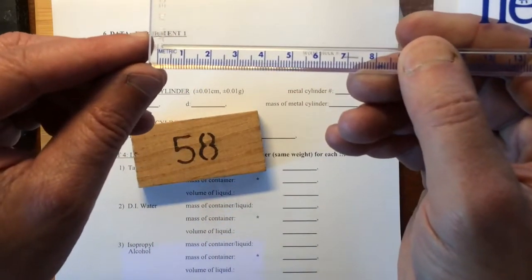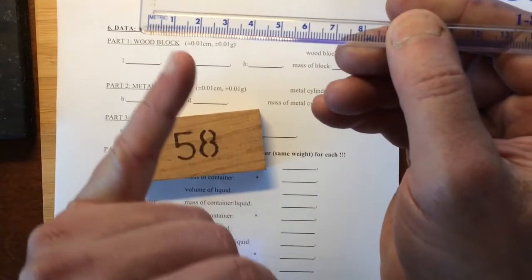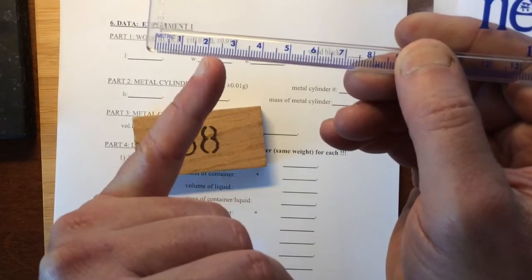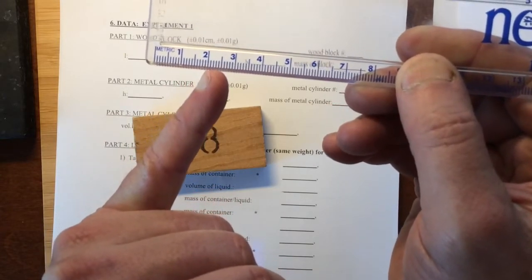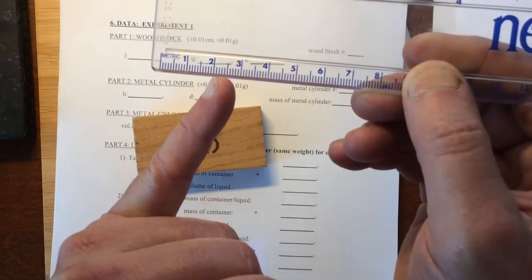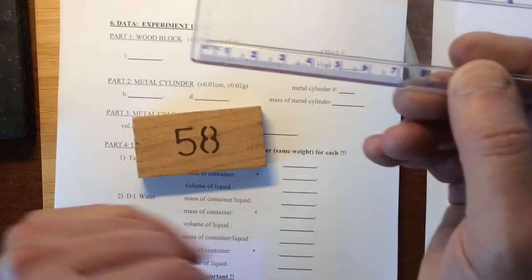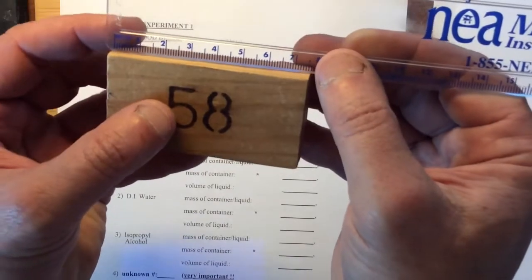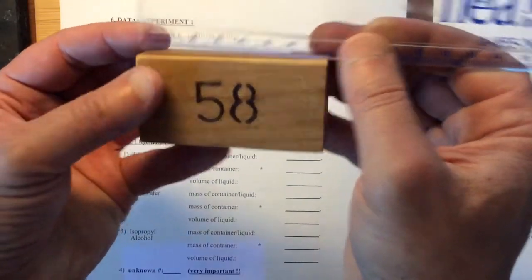If you'll notice on this, the numbered areas are one centimeter, two centimeter, etc. So the individual lines are going to be tenths of centimeters, and we're supposed to read to one tenth of one of those divisions. We're going to have to estimate what that last place is.